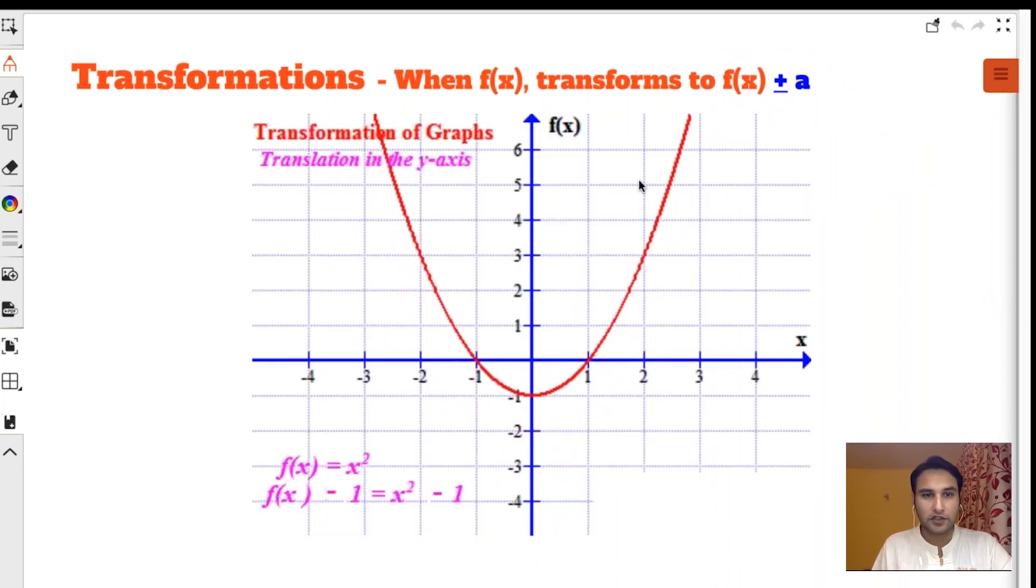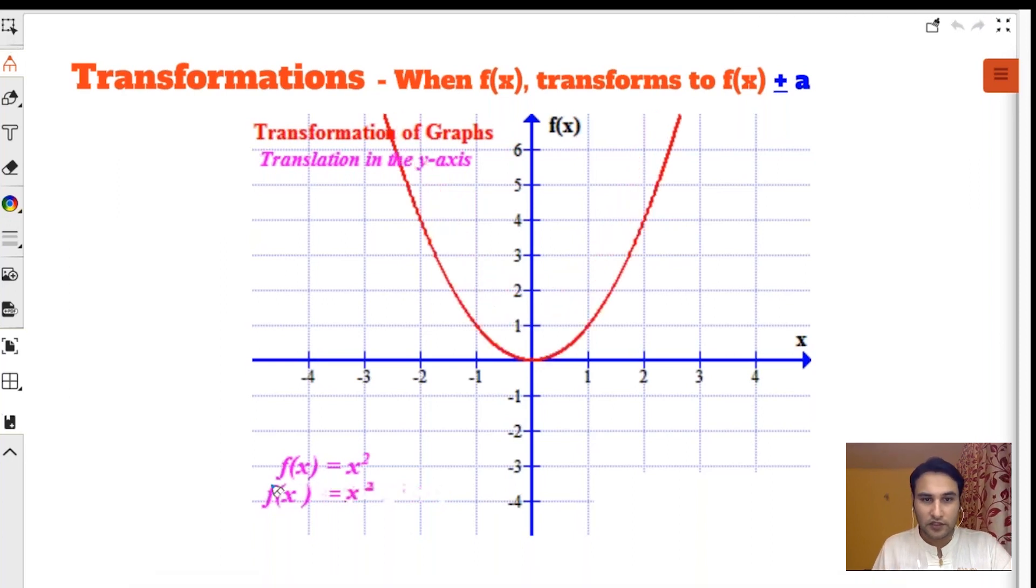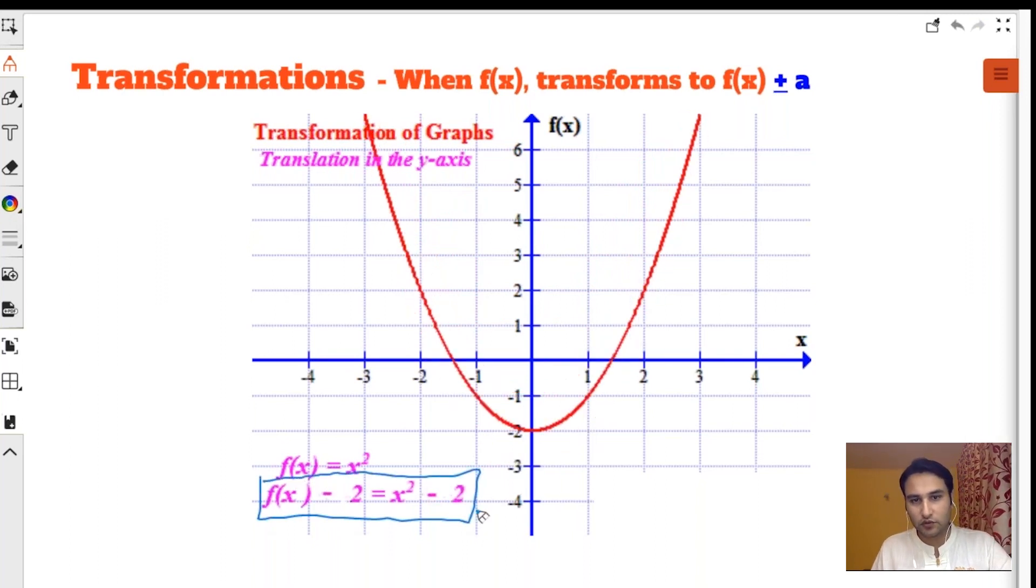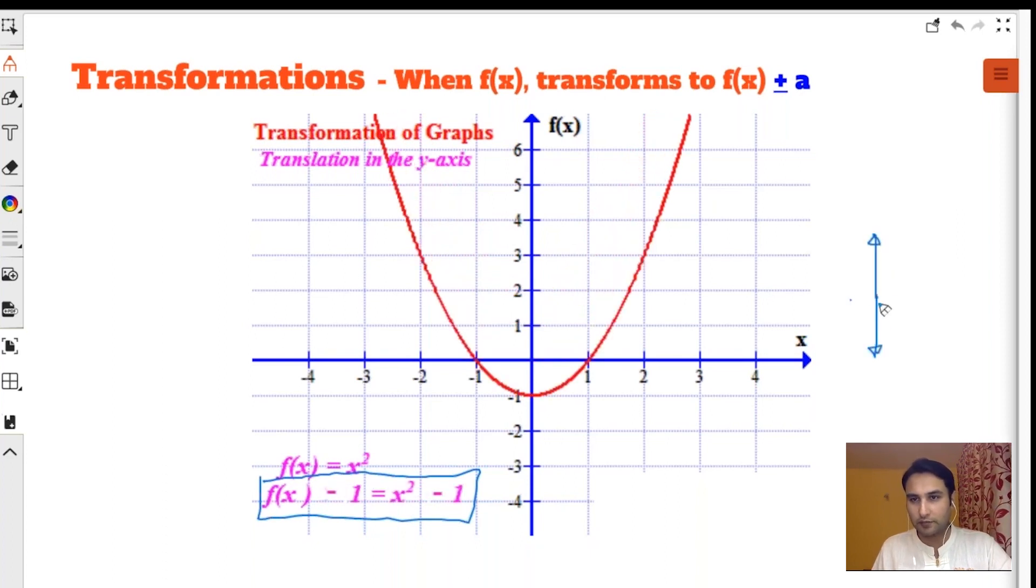Just look here, that is how the graph is transforming. This is exactly what I showed you: x² - 2, x² - 1, x², x² + 1, x² + 2, x² + 3, up and down. Vertically up, vertically down. I'm pretty sure this is clear.